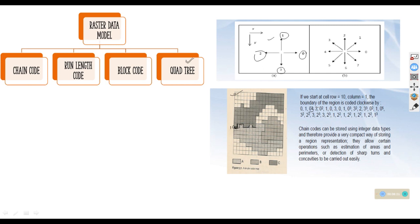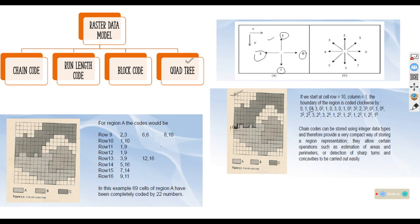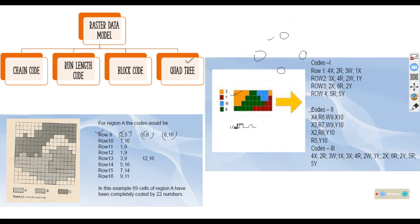In run length code, the same polygon is represented by specifying which cells are occupied in each row. For example, in row 9, column 2 has one pixel; then in the next rows you record entries like (2, 3), (6, 6), and (8, 10) — indicating the column positions of filled cells. That is how run length code represents the raster data model.